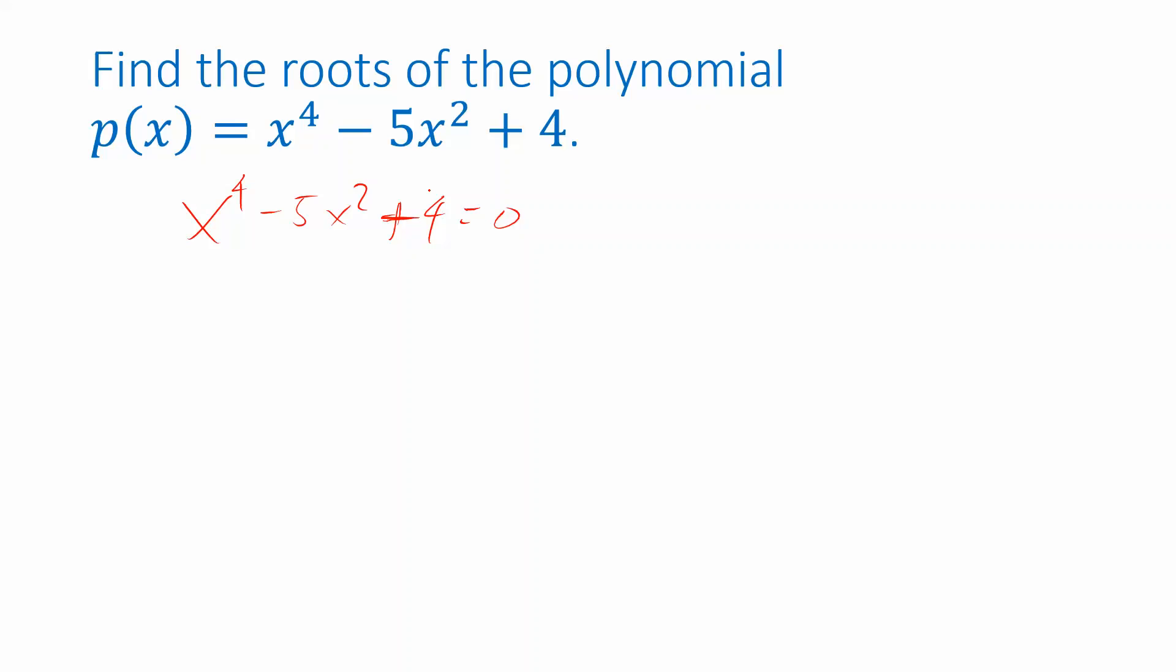Now, there's something special to notice about this example. There is an x to the fourth and an x squared, but there's no x cubed and there's no x to the one. So there's something special we can do here. We can solve this by substituting a variable for x squared. I'm going to use the letter u. So I'm going to let u represent x squared. Why do I do that? Well, on the middle term, let me just jump to that right now, the minus 5x squared. Instead of x squared, now I can write u because u represents x squared.